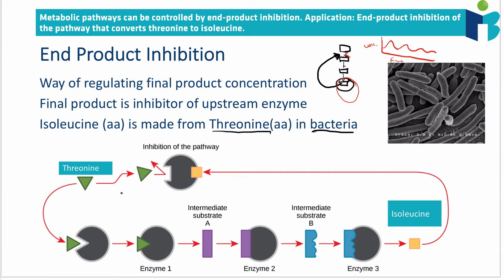We start with threonine and convert it into isoleucine. Enzyme 1 converts threonine into an intermediate substrate, then enzyme 2 converts that into another substrate, and a third enzyme converts that into isoleucine. You don't need to know the names of the enzymes or intermediate substrates — just that isoleucine acts as a non-competitive allosteric inhibitor of the very first enzyme that converted threonine. Isoleucine blocks threonine's ability to bind to the active site by changing its shape.